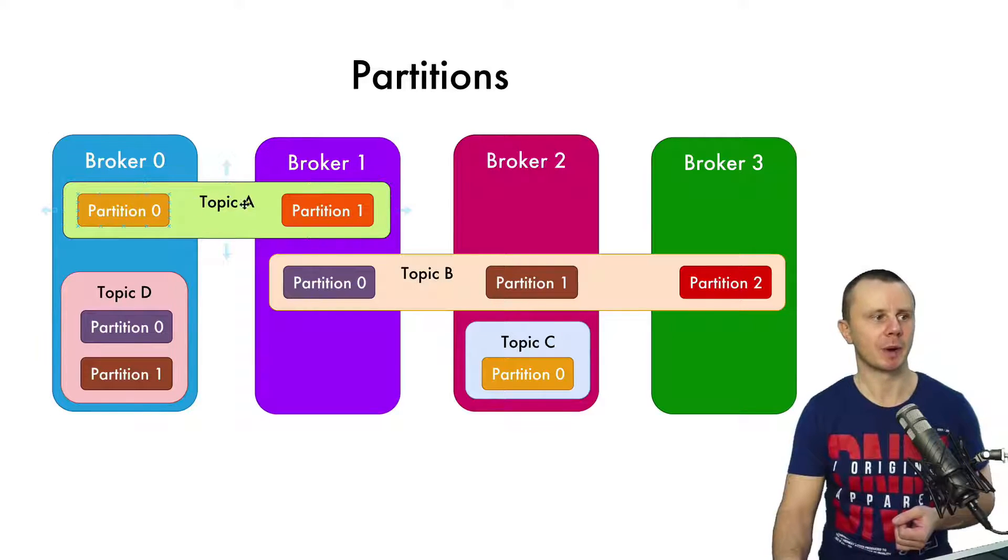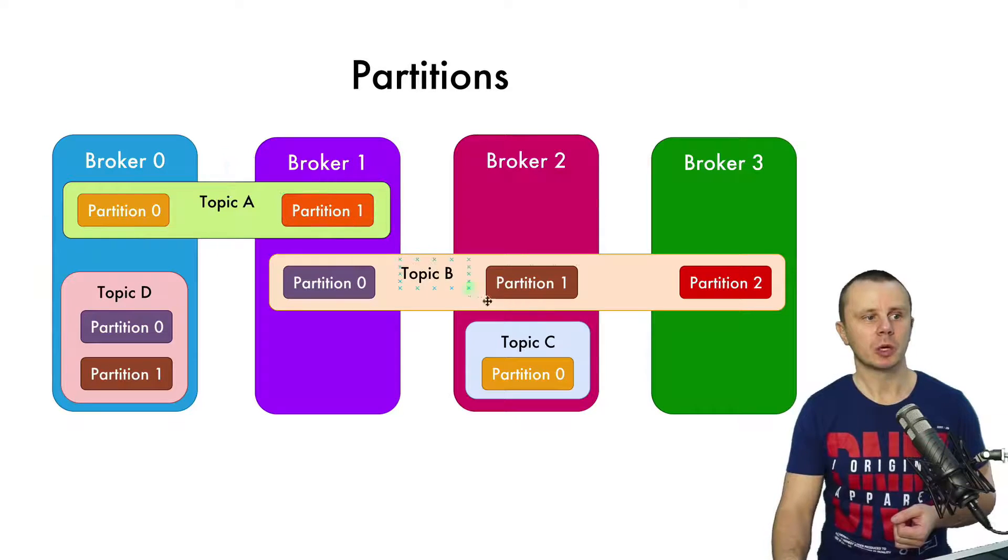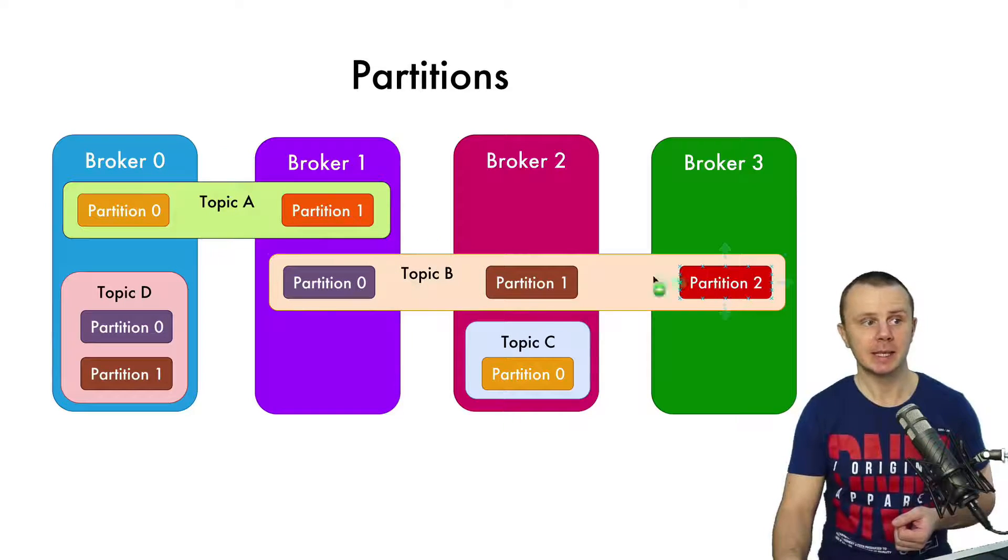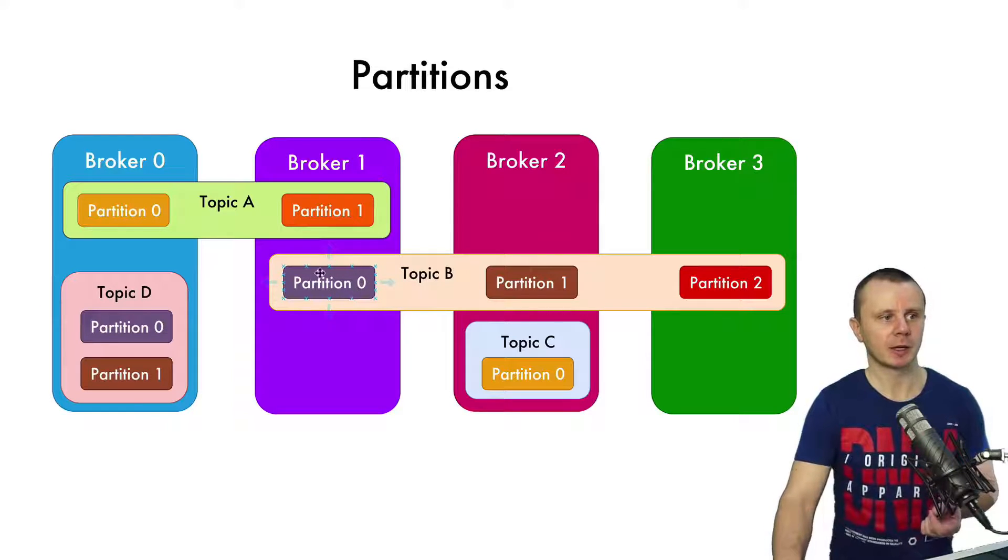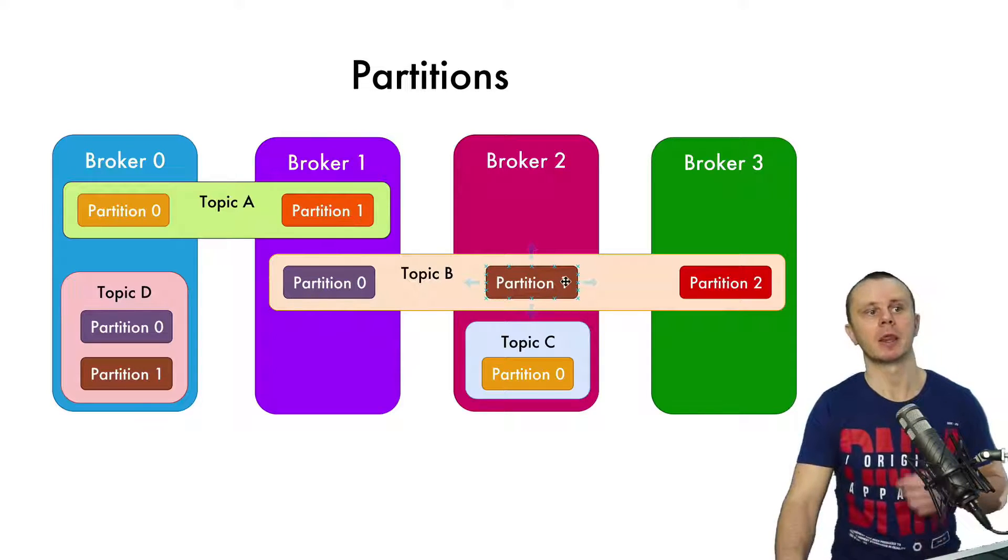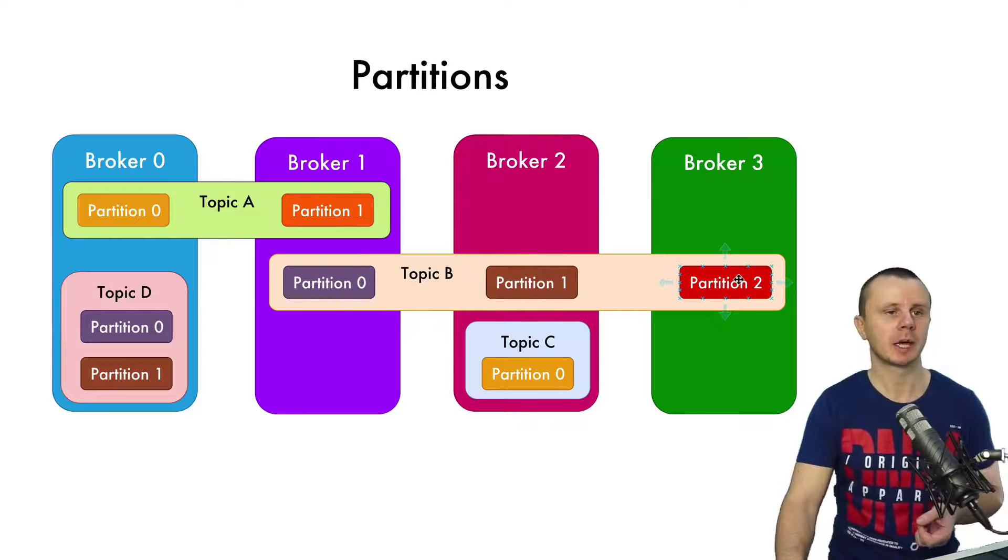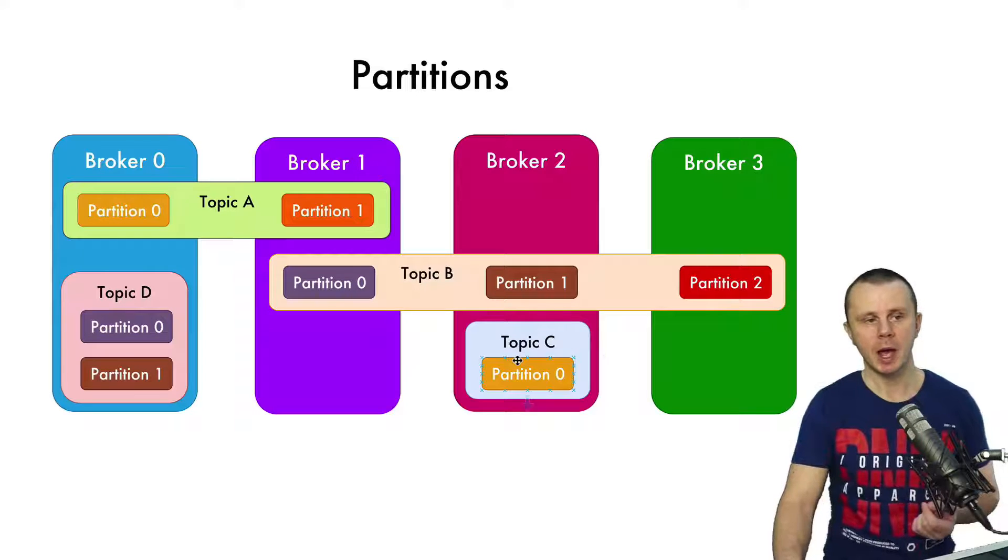Here in this example, you see that Topic A has two partitions: partition 0 and partition 1. One partition is located at broker 0 and the second one is located at broker 1. Topic B has three partitions starting from partition 0 located at broker 1, partition 1 at broker 2, and partition 2 at broker 3. Topic C has only a single partition, partition 0, and it is located only on a single broker.